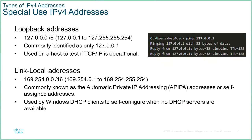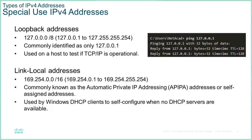Link-local addresses are automatically assigned addresses — basically what happens when Windows fires up and it can't find a DHCP server in the correct time. It will give itself a link-local address, which is the 169.254 address range that you see pop up.